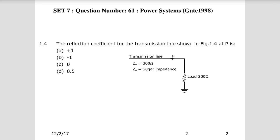Question 1: The reflection coefficient of the transmission line shown in the figure at point P. In the transmission line, the surge impedance is 300 ohms and the load impedance is 300 ohms. Since surge impedance and load impedance are equal, the reflection coefficient will be 0. So the answer will be choice C.